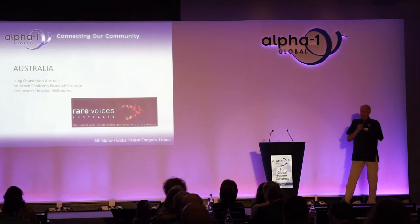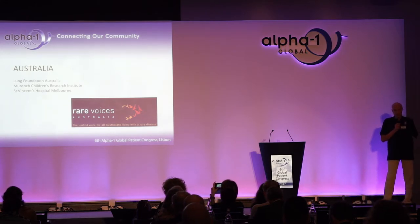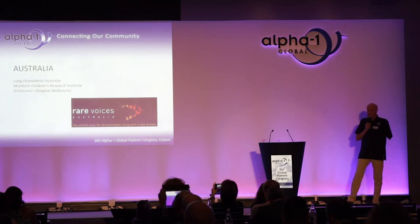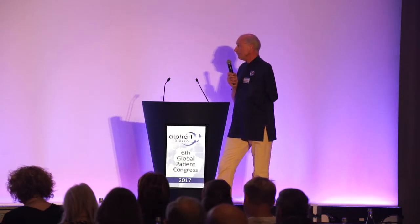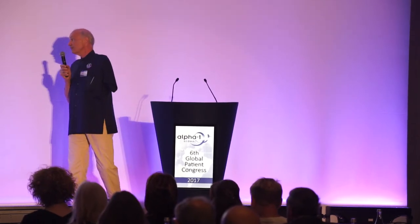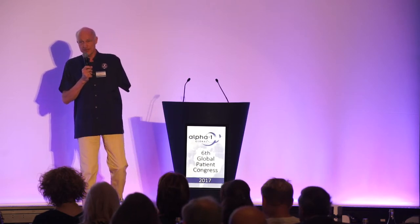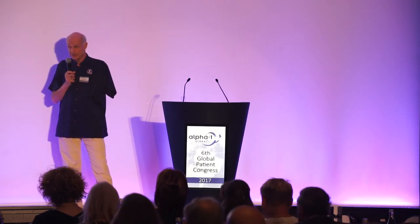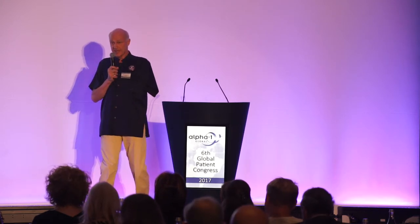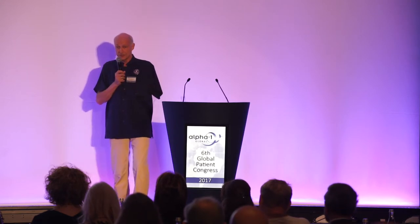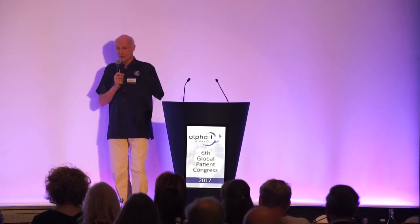Looking at Australia—the question is what the Alpha-1s in Australia should go for and how to link. There is a structure of rare diseases called Rare Voices Australia. There are other structures like St. Vincent Hospital in Melbourne or the Murdoch Children's Research Institute. It depends on the situation of Alpha-1s in Australia and where to find help. In networking, we have to go together, but it doesn't mean more work—it means we can also get support.